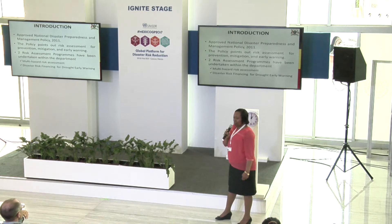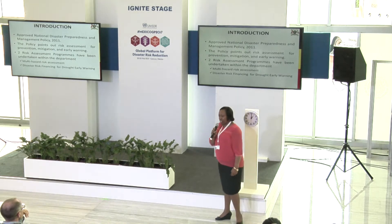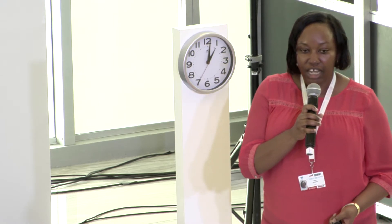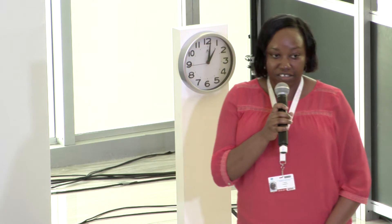So far, we have conducted two major risk assessments: one covering the national level, that is the Malthazar risk assessment, and another one covers the one region of the country that is prone to drought — that is disaster risk financing, what is commonly known as risk transfer.